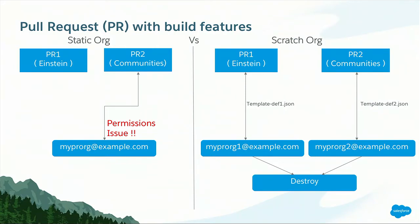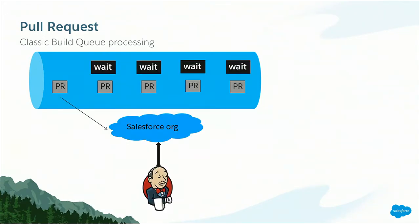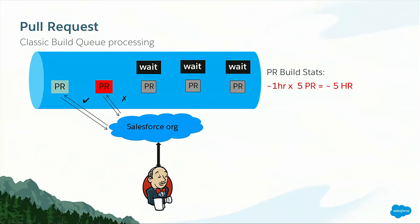Let's get into another scenario — the classical view of a pull request build queue. Anybody who has worked with Jenkins knows the build queue for pull requests. All developers have completed their development and the pull requests are in a waiting state. Using the static org method, we start building pull requests on that org while all other pull requests are in a waiting state. This is a huge bottleneck — any pull request that needs to build has to wait for that org to be freed up. Once the build for the first pull request completes, that's when you can start building the second. Assuming each pull request takes one hour, the whole build queue would take around five hours to complete.